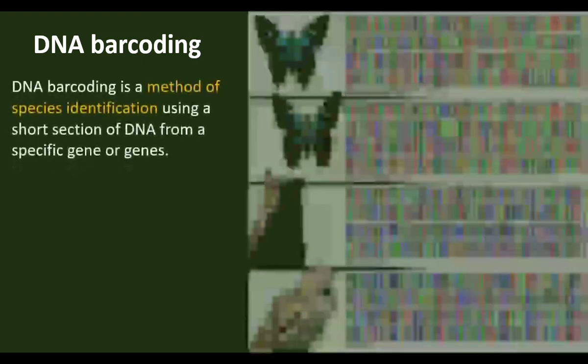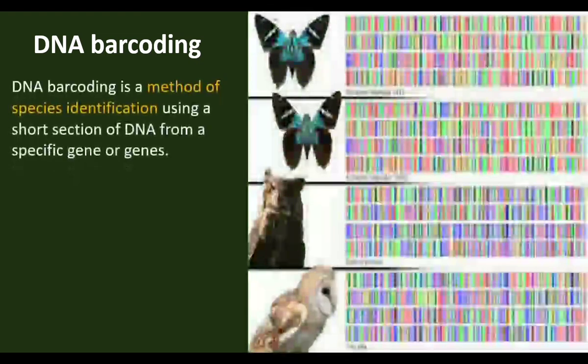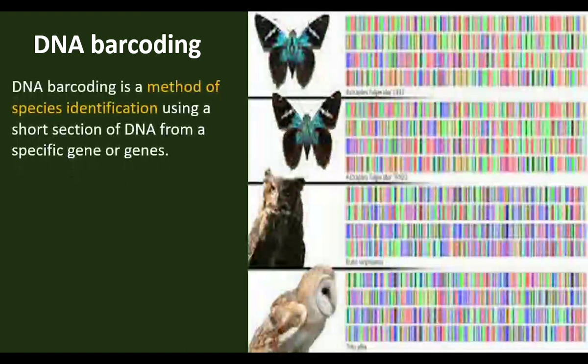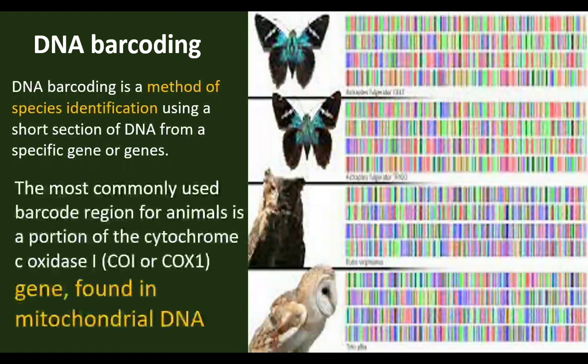DNA barcoding is a molecular taxonomical tool. In this tool, short DNA sequences from a gene or genes are used for identifying a species. Generally, a gene from mitochondrial DNA is taken for DNA barcoding, and this is used for the purpose of identifying a species.